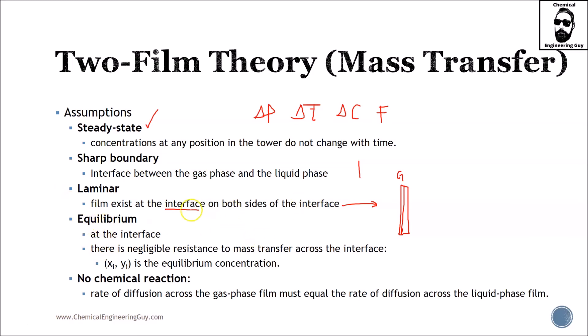Equilibrium at the interface—that's very important. In the theoretical case of the interface, we should assume equilibrium. There is negligible resistance to mass transfer across the interface, meaning Xi and Yi are related with respect to equilibrium. And of course, no chemical reaction, even though there are certain cases where we do have chemical reaction. This means the rate of diffusion across the gas phase film must equal the rate of diffusion across the liquid phase film. If we have chemical reaction within the interface, you'd expect different numbers. But for now, let's assume we work with no chemical reaction.